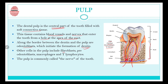Other cells in the pulp include fibroblasts, pre-odontoblasts, macrophages, and lymphocytes. The pulp is commonly known as the nerve of the tooth. To summarize: the pulp is the central part filled with blood vessels and nerves, it has cells like odontoblasts, fibroblasts, and macrophages, and it is commonly known as the nerve of the tooth.